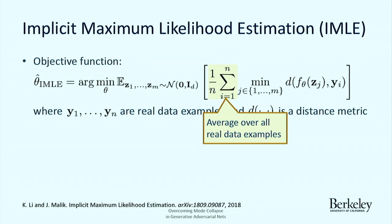Q: What is preventing the generator from putting a lot of mass in a region of space where data density is actually low? A: Because we have fixed model capacity, if we want to pull samples close to every data example, we are essentially stealing density from somewhere else toward each data example. Since the density has to integrate to one, the best place to steal from will be places where you don't observe any data. So the model is naturally discouraged from putting mass in low-density regions.